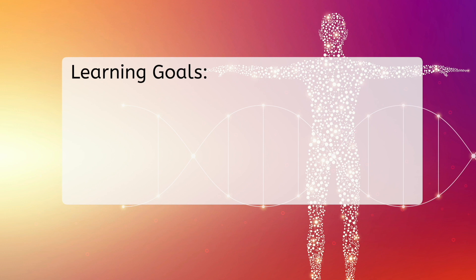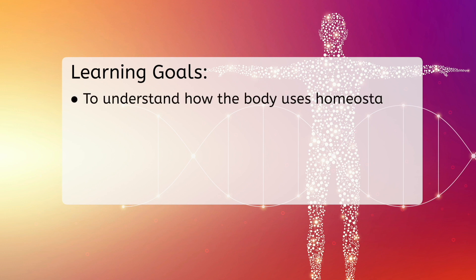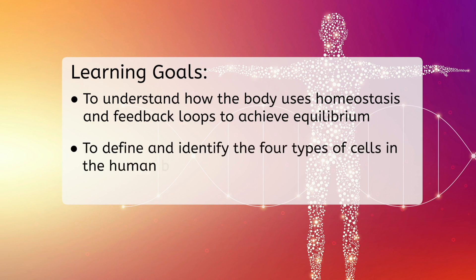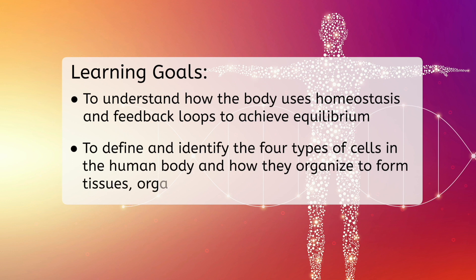By the end, you'll be able to understand how the body uses homeostasis and feedback loops to achieve equilibrium. Define and identify the four types of cells in the human body and how they organize to form tissues, organs, and organ systems.